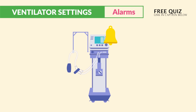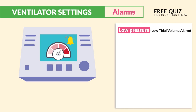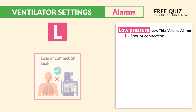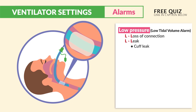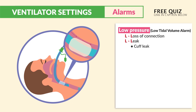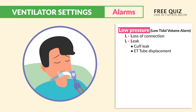We have two types of alarms: low pressure and high pressure. For low pressure, this is known as a low tidal volume alarm — just think of the double L's. It means we have a loss of connection resulting in an air leak, typically caused by a cuff leak that's not tight enough or ET tube displacement.